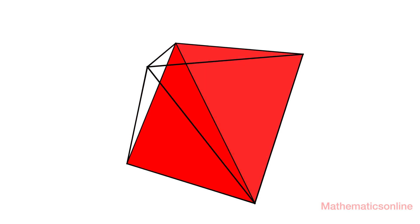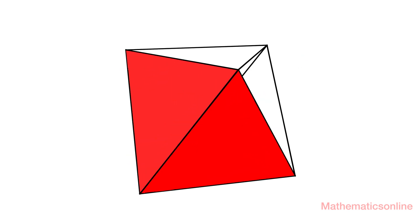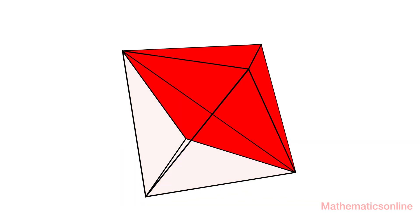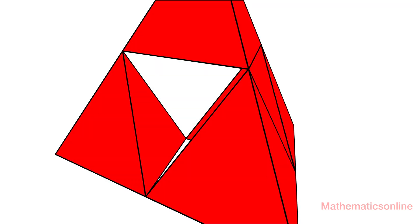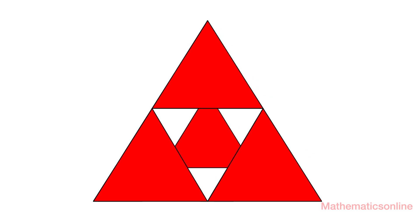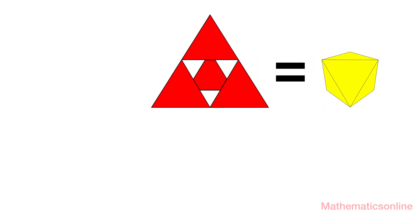We can start to see that 2 tetrahedrons would occupy half the space, and 4 tetrahedrons would fill the remaining space. So the volume of the 4 tetrahedrons is equal to the volume of the octahedron.